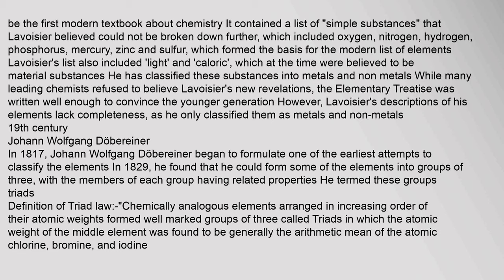In 1817, Johann Wolfgang Döbereiner began to formulate one of the earliest attempts to classify the elements. In 1829, he found that he could form some of the elements into groups of three, with the members of each group having related properties. He termed these groups Triads — chemically analogous elements arranged in increasing order of their atomic weights, forming groups of three in which the atomic weight of the middle element was generally the arithmetic mean of the other two. Examples include chlorine, bromine and iodine.